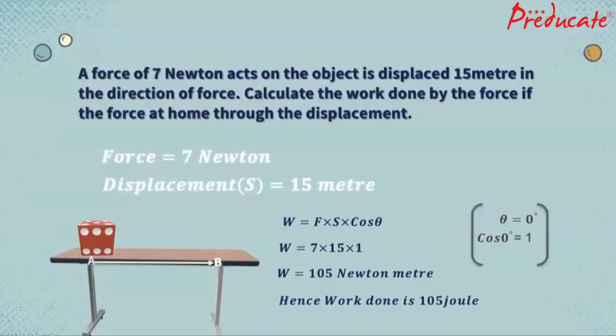Now let's do one numerical to find out work. A force of 7 newton acts on the object is displaced 15 meter in the direction of force. Calculate the work done by the force if the force acts through the displacement.